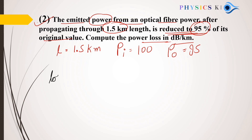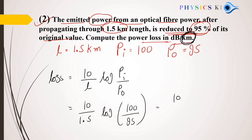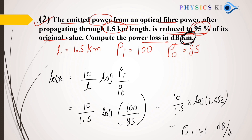The loss equation is: power loss = (10 / L) × log(Pi / Po). With L = 1.5 km, Pi = 100, Po = 95: (10 / 1.5) × log(100/95) = (10 / 1.5) × log(1.05) ≈ 0.146 dB per kilometer. This is your answer.